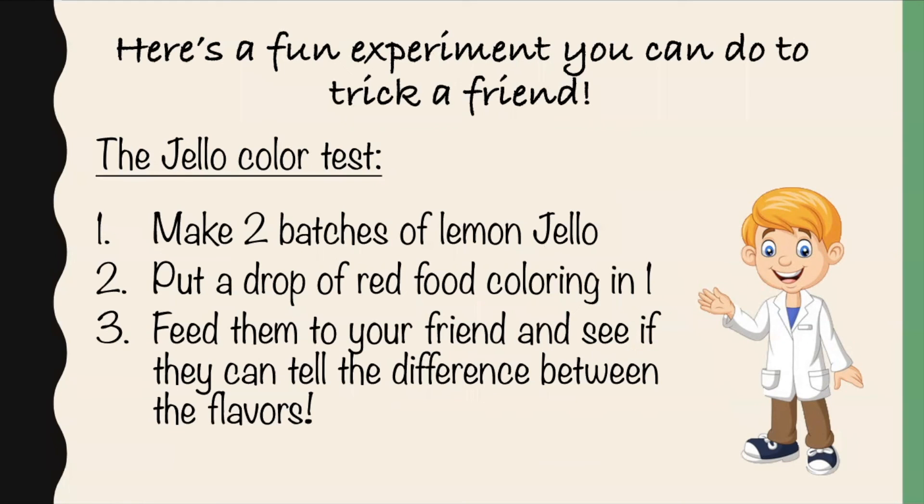Brainiac's favorite experiment, the Jell-O color test, is his favorite way to trick his friends and learn about neuroscience all at the same time. To do this, you just need two batches of light-colored Jell-O, like lemon, and some food coloring. We are using red for this to turn one of the batches orange. You can feed this yellow and orange batch to your friends and see if they can tell you if there's a difference in flavor.